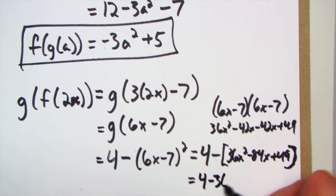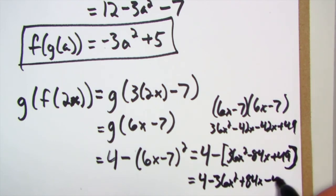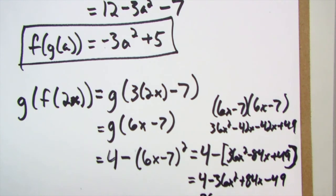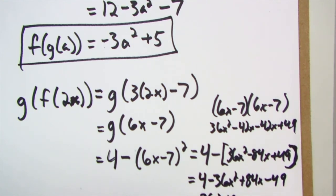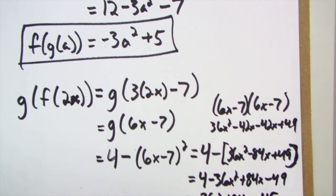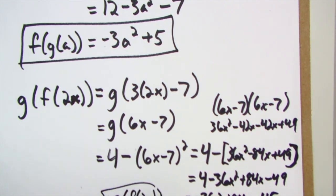And that's going to be negative 36x squared plus 84x minus 45, and that's what g of f of 2x is. You can do this. You can do anything on the assignment.